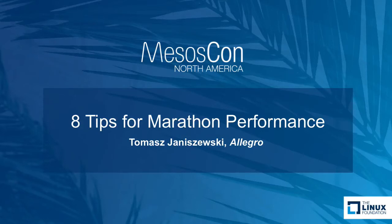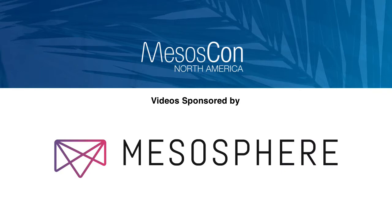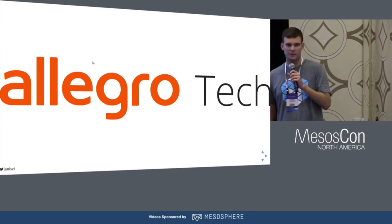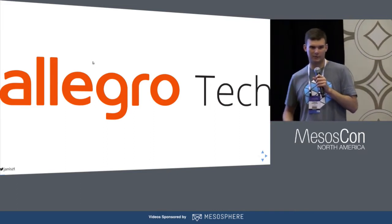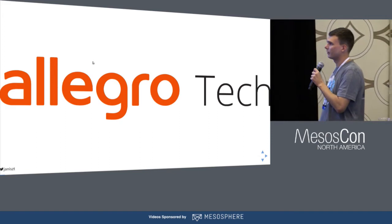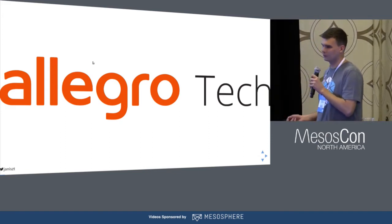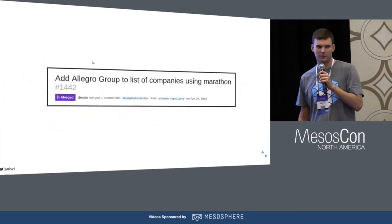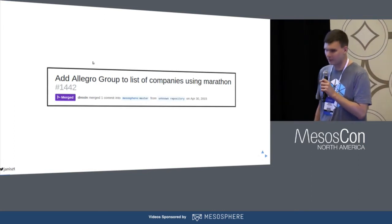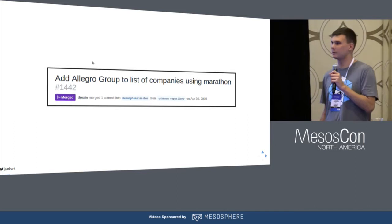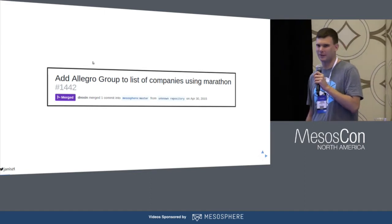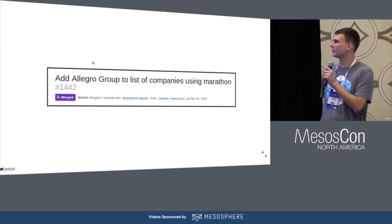I'm Tomek and I'm working at Allegro, which is an e-commerce platform located in Central Europe, Poland. Today I want to share our journey with Marathon performance and the problems that arrived on our road to the current solution we developed. We started using Marathon and Mesos in 2015 — this is my first commit — and once we started using Marathon in production, I updated the README, and that's how it started.